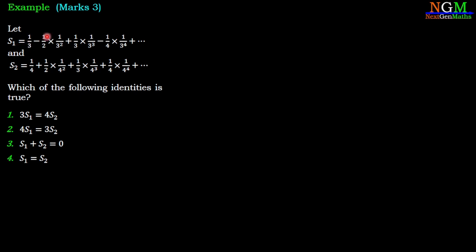S1 equals 1/3 minus 1/2 · (1/3)² plus 1/3 · (1/3)³ minus 1/4 · (1/3)⁴, and S2 equals 1/4 plus 1/2 · (1/4)² plus 1/3 · (1/4)³ plus 1/4 · (1/4)⁴. Each of the following identities — find which is true. The four options are: (1) 3S1 = 4S2, (2) 4S1 = 3S2, (3) S1 + S2 = 0, and (4) S1 = S2.